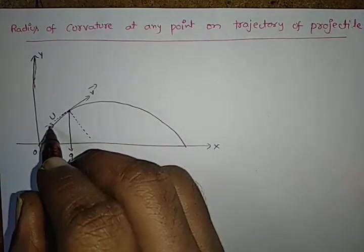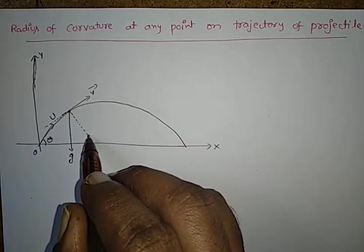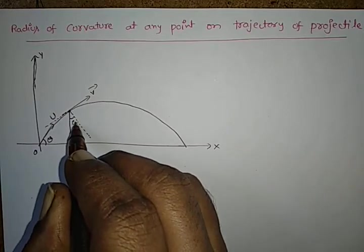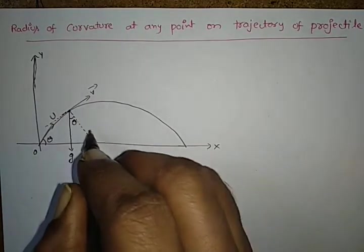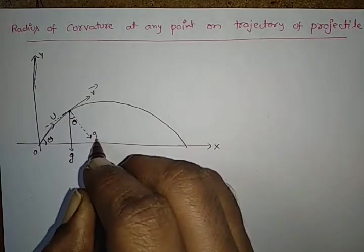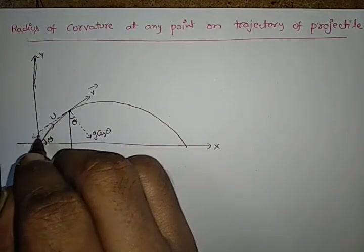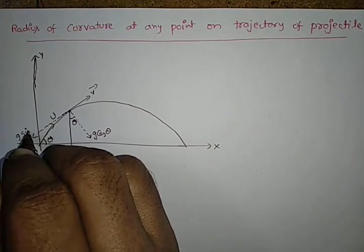I draw rectangular lines here. This angle is equal to 90 minus theta, so therefore this is equal to theta. Therefore component of g along this direction is g cos theta, component of g along this direction is g sin theta.